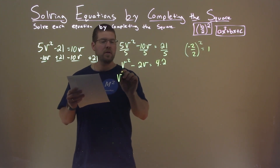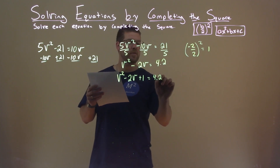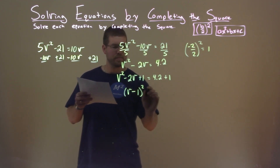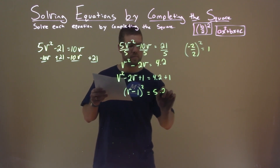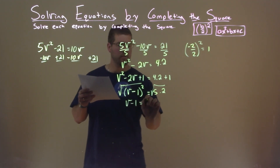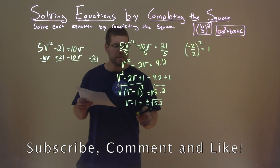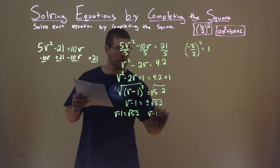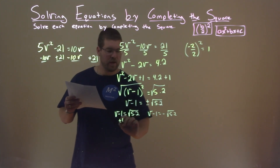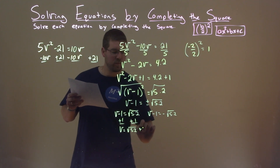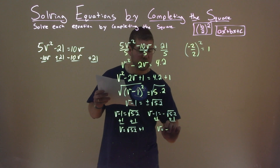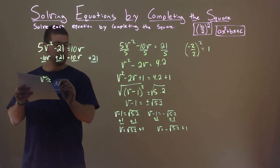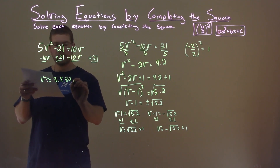We're going to add 1 to both sides: v squared minus 2v plus 1 equals 4.2 plus 1. The left-hand side is a perfect square — v minus 1 squared equals 5.2. Taking the square root of both sides: v minus 1 equals plus or minus the square root of 5.2. Two equations: v minus 1 equals positive square root of 5.2 gives v equals square root of 5.2 plus 1; and v minus 1 equals negative square root of 5.2 gives v equals negative square root of 5.2 plus 1. As decimals, those are approximately 3.280 and negative 1.280.